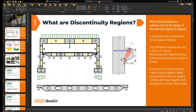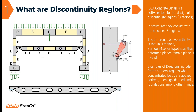Before we proceed, let's discuss a little bit about discontinuity regions, because the reason we want to export this simple structure into Ideastatica is because it includes discontinuity regions. In concrete structures, two types of regions coexist. These are the B regions, where the Bernoulli-Navier hypothesis - that deformed planes remain plain after deformation - is valid. These are colored in yellow. And there are also the D regions where this basic hypothesis is not valid. Examples of D regions include frame corners, concentrated loads, etc. Beams with openings are D regions - the whole member of a beam with openings is the D region.